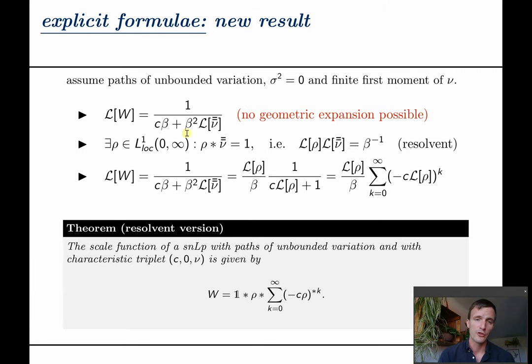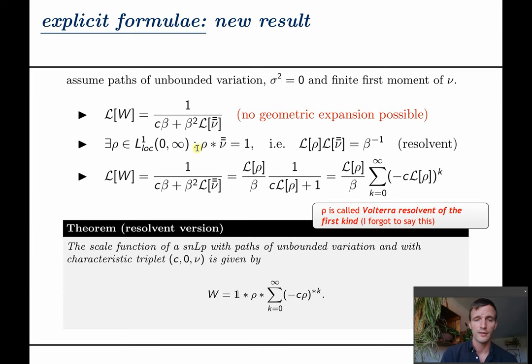Here a geometric expansion is not immediately possible as this term grows faster than this one. However from the theory of Volterra integral equations we know that for our double bar ν there exists a function ρ such that this convolution equals one.